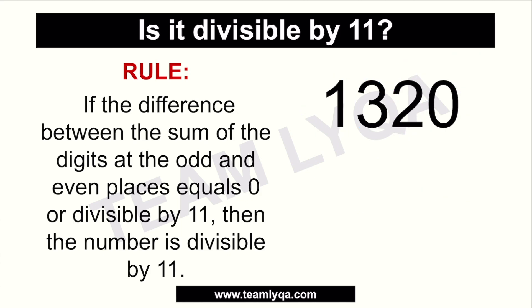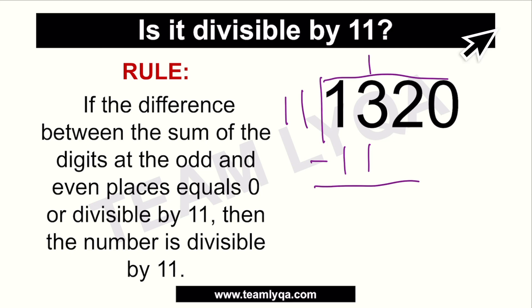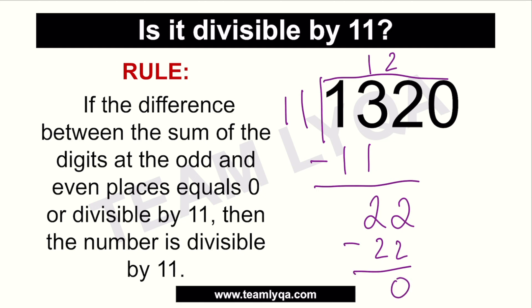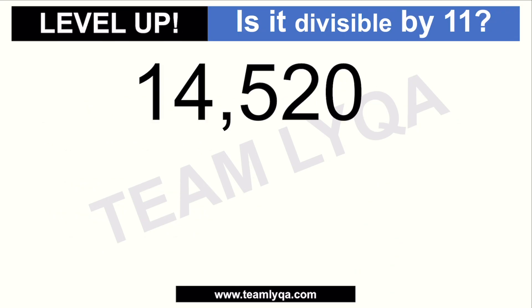We can verify this by doing long division. 1320 divided by 11: 13 divided by 11 is 1 with remainder 2; bring down to get 22; 22 divided by 11 is 2; bring down 0, giving us 0 remainder. There's no remainder, which confirms 1320 is indeed divisible by 11.